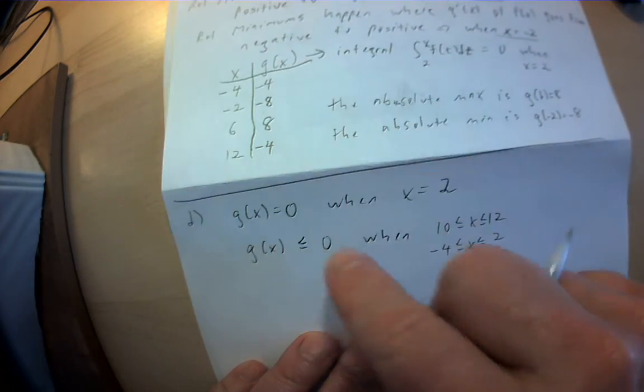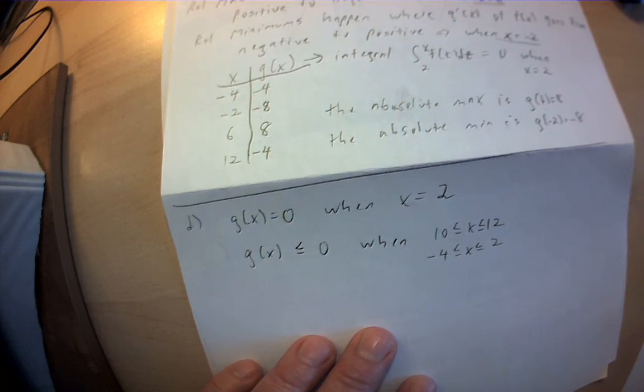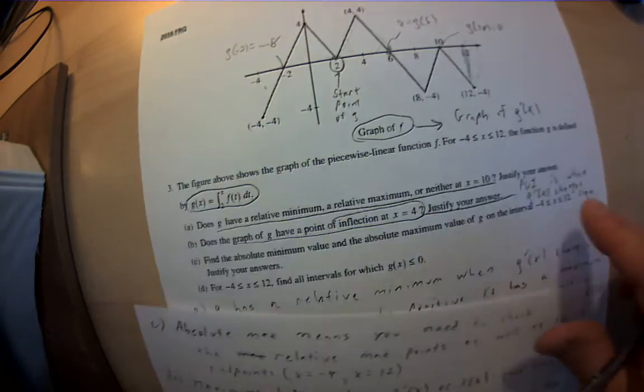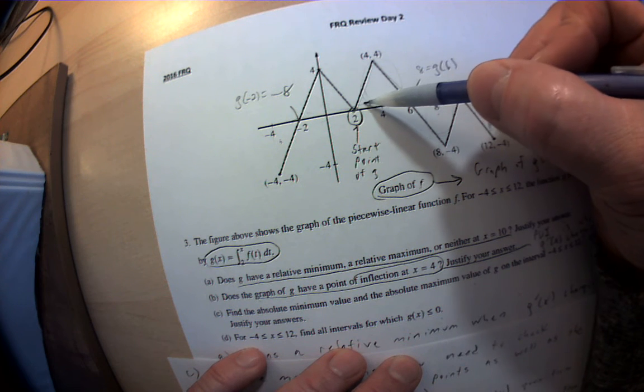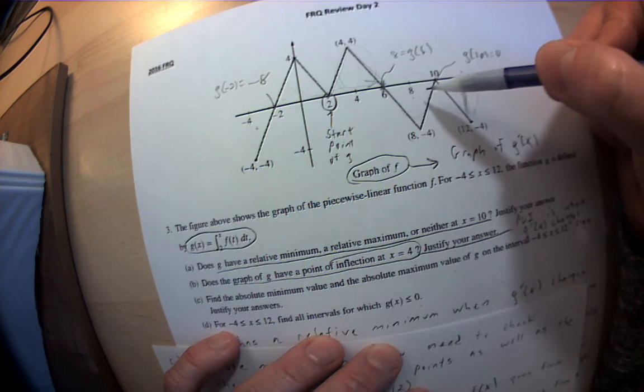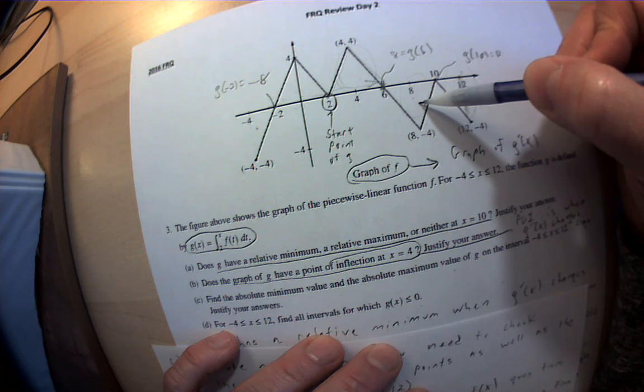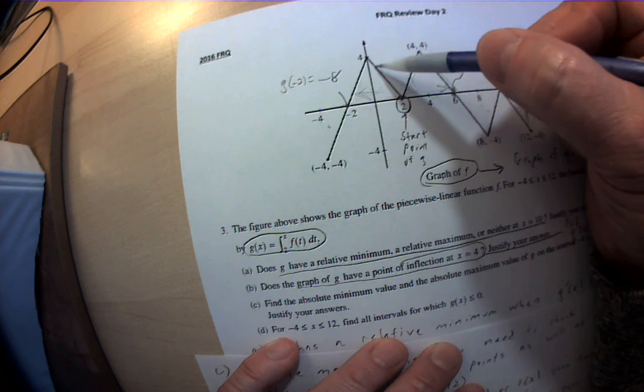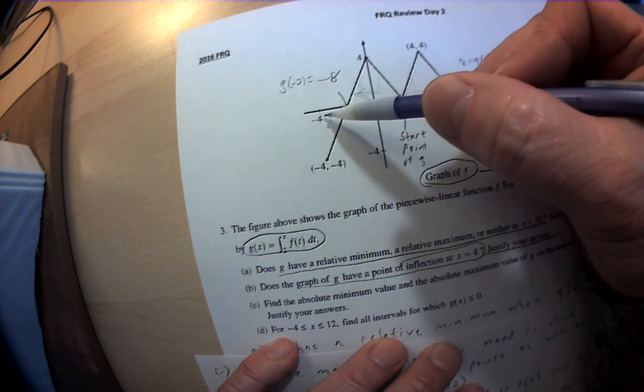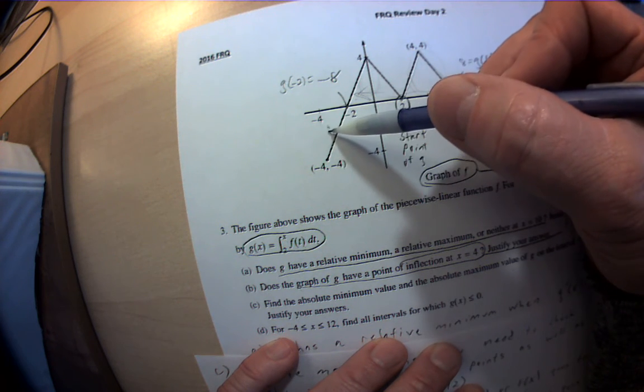So part C kind of helps you with part D in terms of seeing the areas. Again, you've got to know how to interpret these graphs when they give you areas. Moving forward, positive areas if you're above the line, negative areas if you're below the line. Going backwards, things above the x-axis are negative, things below the x-axis are positive.